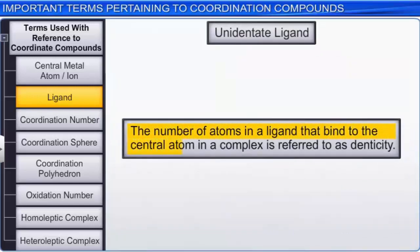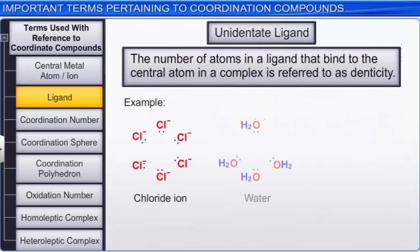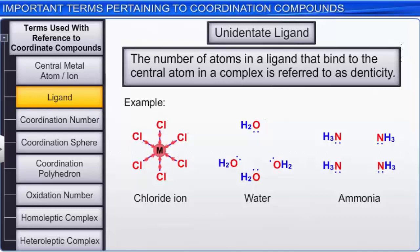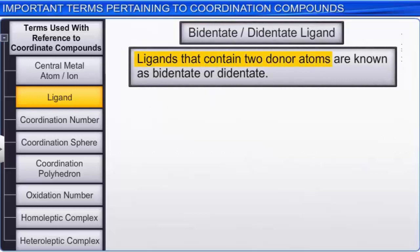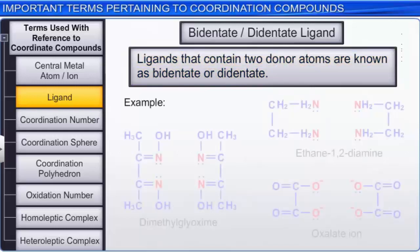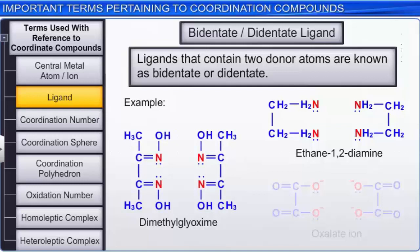When a ligand is bound to a metal ion through a single donor atom, as with a chloride ion, a water molecule, or an ammonia molecule, the ligand is said to be unidentate. Ligands that contain two donor atoms are known as bidentate or didentate. Common examples of didentate ligands are ethane-1,2-diamine, dimethylglyoxime, and oxalate ion. These ligands have two donor atoms that can simultaneously bind to the central metal atom.